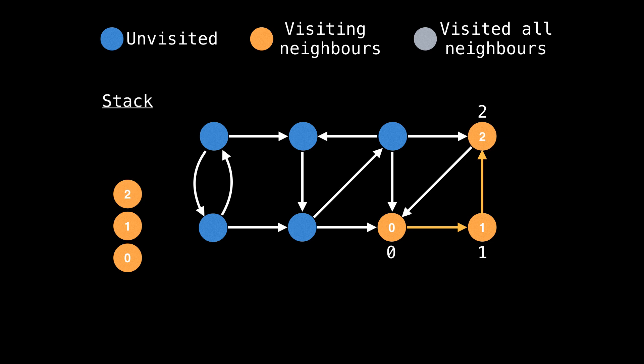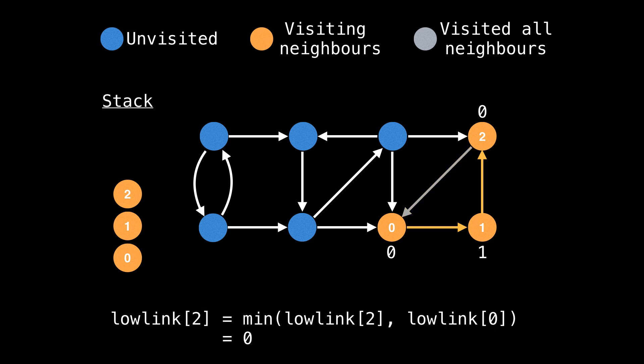Now we're at node two and our only option is to visit node zero. Since node zero is already visited, we don't visit it again. So now we backtrack. On the backtracking, since node zero is on the stack, we take the minimum of the current node's low link value and node zero's low link value.